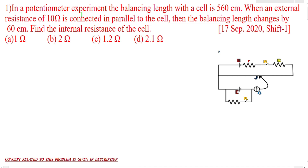The first question is: in a potentiometer experiment, the balancing length with a cell is 560 centimeters. When an external resistance of 10 ohm is connected in parallel to the cell, the balancing length changes by 60 centimeters. Find the internal resistance of the cell.